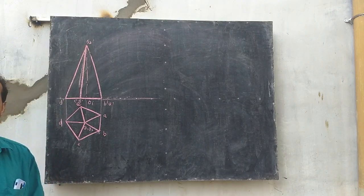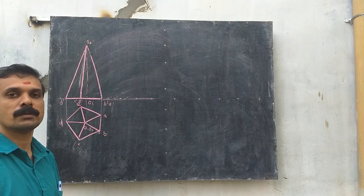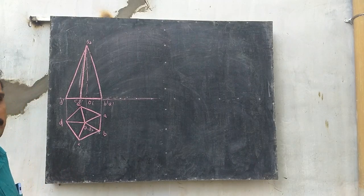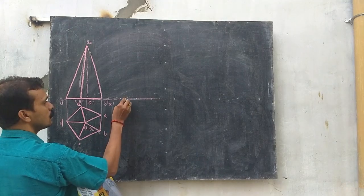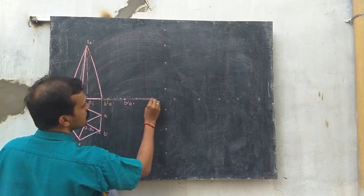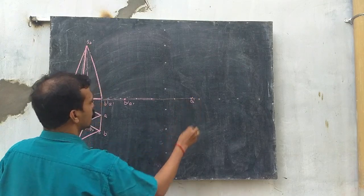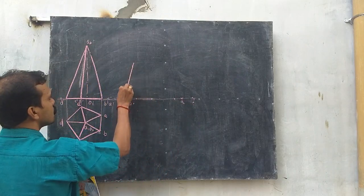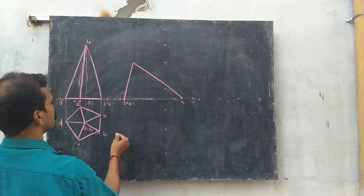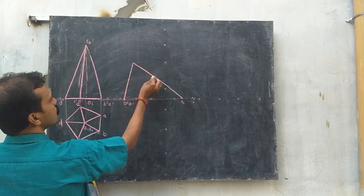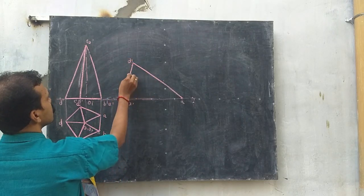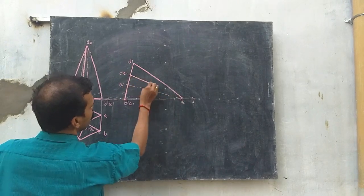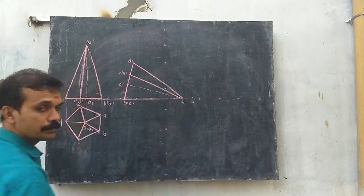This is the simple position of the pentagonal pyramid. Now we have to make it rest on one of its triangular faces. For that, take this point as v-dash and take this much distance. Now complete — v-dash, v-dash, v-dash, v-dash, v-dash, v-dash — okay.